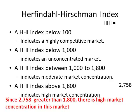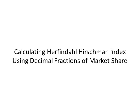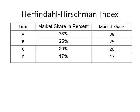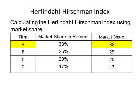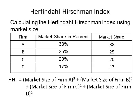Let's recalculate the Herfindahl-Hirschman Index using decimal fractions instead of percentages. In this example, Firm A controls 0.38 of the market, Firm B controls 0.25, Firm C controls 0.20, and Firm D controls 0.17. The first step is to write down the formula: HHI = (share of Firm A)² + (share of Firm B)² + (share of Firm C)² + (share of Firm D)².